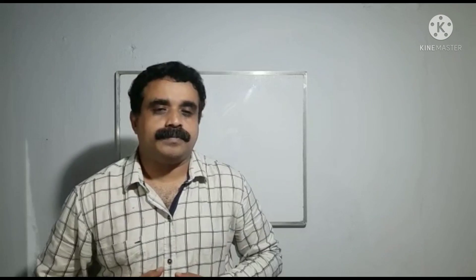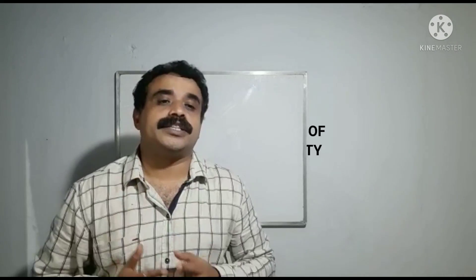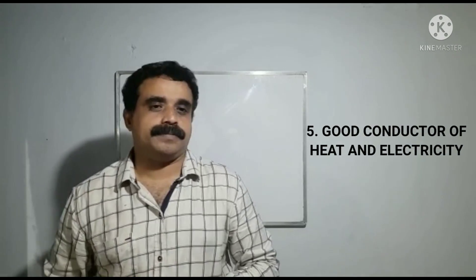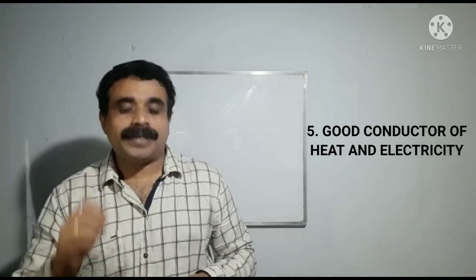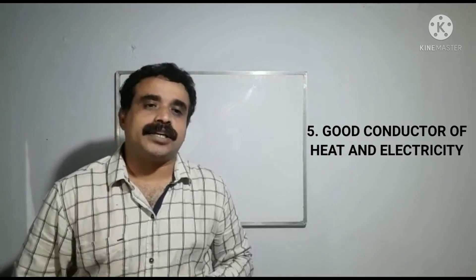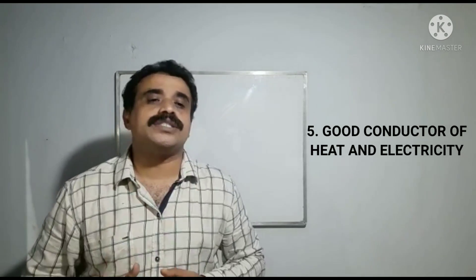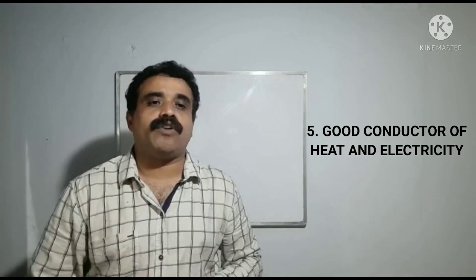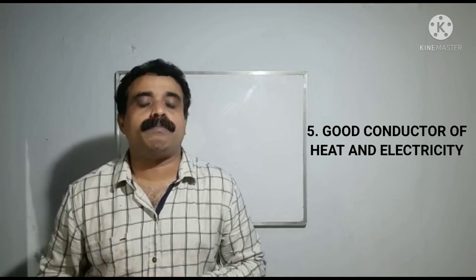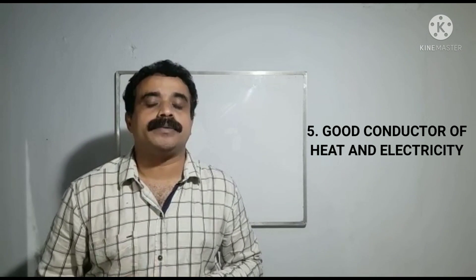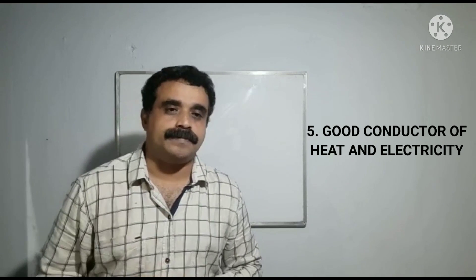Property number five: good conductors of heat and electricity. Metals are good conductors of heat and electricity. This is the reason that electric wires are made of metals like copper and aluminum.